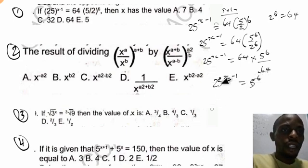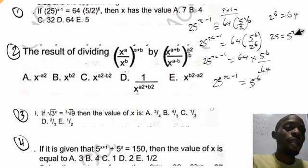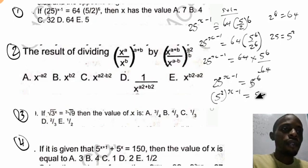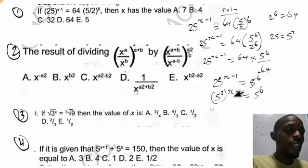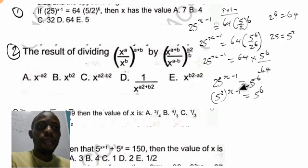Now, the left side has base 25 and the right side has base 5. We know that 25 can be expressed in index form as 5 raised to the power of 2, because 5 times 5 equals 25. So we apply this: 5 raised to the power of 2, open bracket s minus 1, close bracket, equals 5 raised to the power of 6. Since the bases are the same, we multiply the powers: 2 times s minus 1.